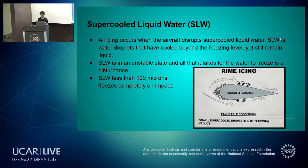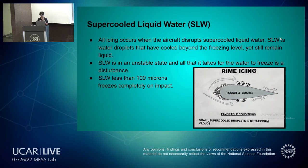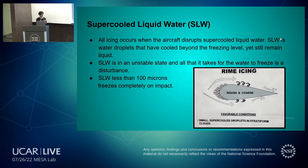Supercooled liquid water is the condition that causes structural icing. These are droplets that are below the freezing temperature, although still in liquid form. They are very unstable, and all it takes is the disruption of an airplane flying through for them to freeze. In this picture, the right side is the leading edge of the wing and the left is the trailing edge. These supercooled liquid water droplets freeze on contact cleanly on just that leading edge, which disrupts airflow minimally.